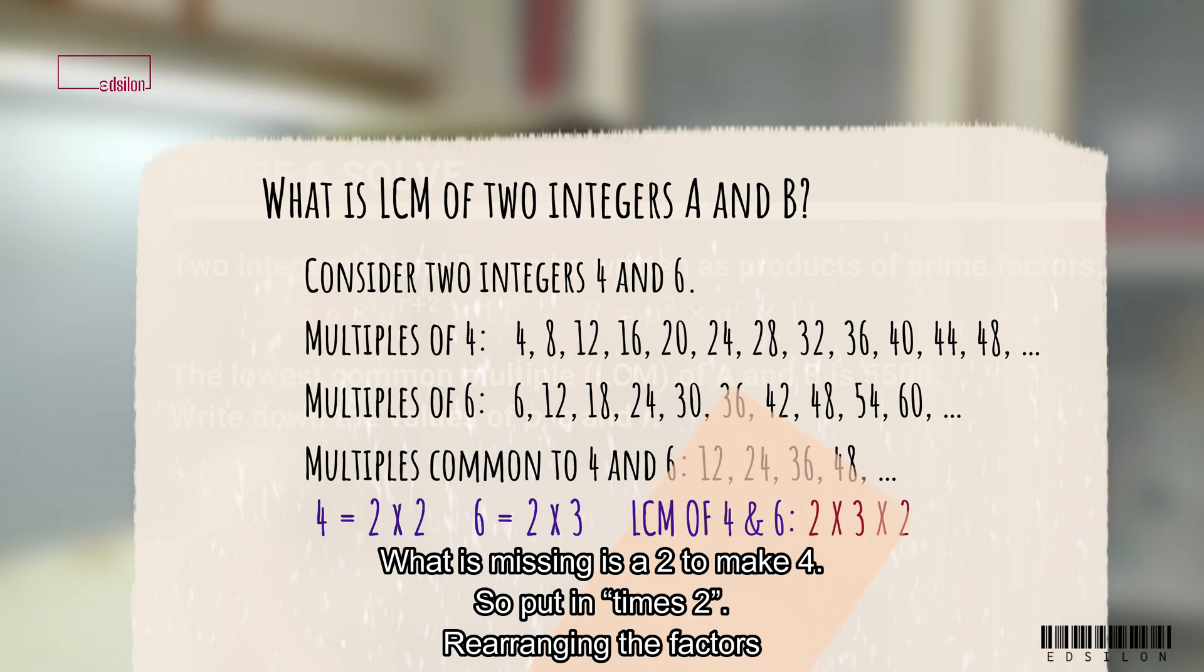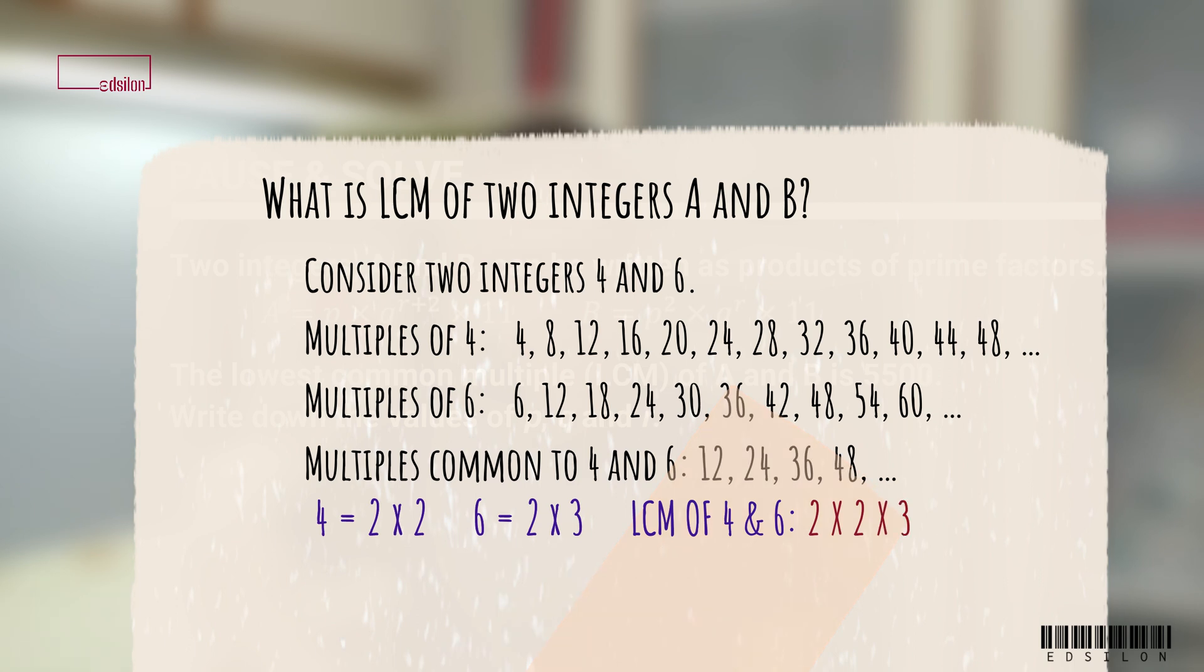No. What is missing is a 2 to make 4. So, put in times 2. Rearranging the factors. Hence, the LCM is 2 times 2 times 3, which equals 12.